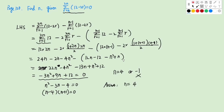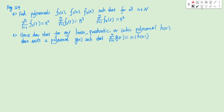So the answer is N equals 4. That's the first question. Let's take a look at the second question. Here we want to find polynomials F2, F3, F4 such that for all N these equations hold. Let's take a look at the first equation — the sum equals N squared — and this is a polynomial, so most likely this will be a polynomial of degree 1.